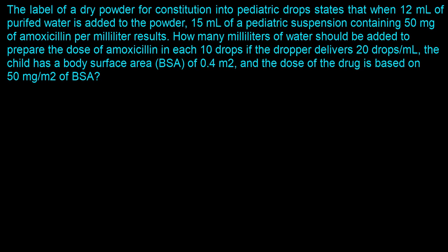This question was asked by one of our subscribers — it's an interesting reconstitution calculation question. The question says: the label of a dry powder for reconstitution into pediatric drops states that when 12 milliliters of purified water is added to the powder, 15 milliliters of a pediatric suspension containing 50 milligrams of amoxicillin per milliliter results. How many milliliters should be added to prepare the dose in each 10 drops, if the dropper delivers 20 drops per milliliter? The child has a BSA of 0.4 meters squared and the dose is 15 milligrams per meter squared of BSA.